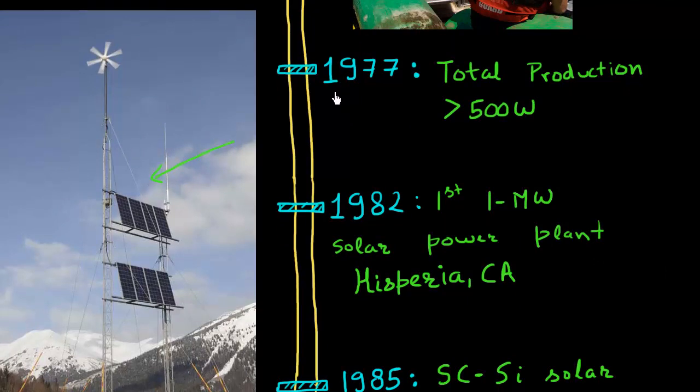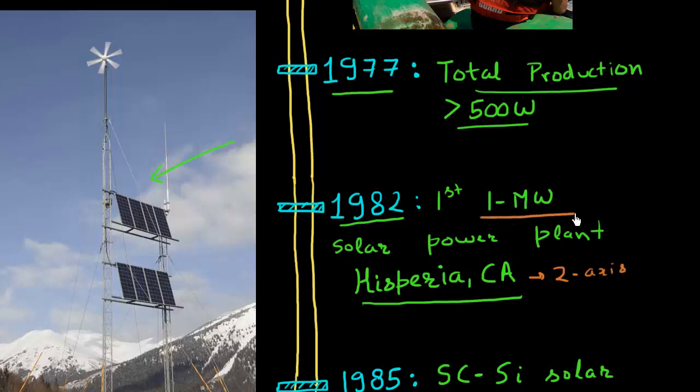Around 1977 was the year when the total production of these solar panels exceeded 500 watts. In 1982 was the first megawatt scale solar power plant which was installed. The first plant was located in California. It used dual-axis tracking and had an installed capacity of one megawatt of peak power.